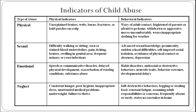Second, indicators of sexual abuse. Physical indicators include difficulty walking or sitting, torn or stained bloody underwear, pain, itching, bruises or swelling in the genital area, and frequent urinary or yeast infections. Behavioral indicators include advanced sexual knowledge, promiscuity, sudden school difficulties, self-imposed social isolation, avoidance of physical contact or closeness, and depression.